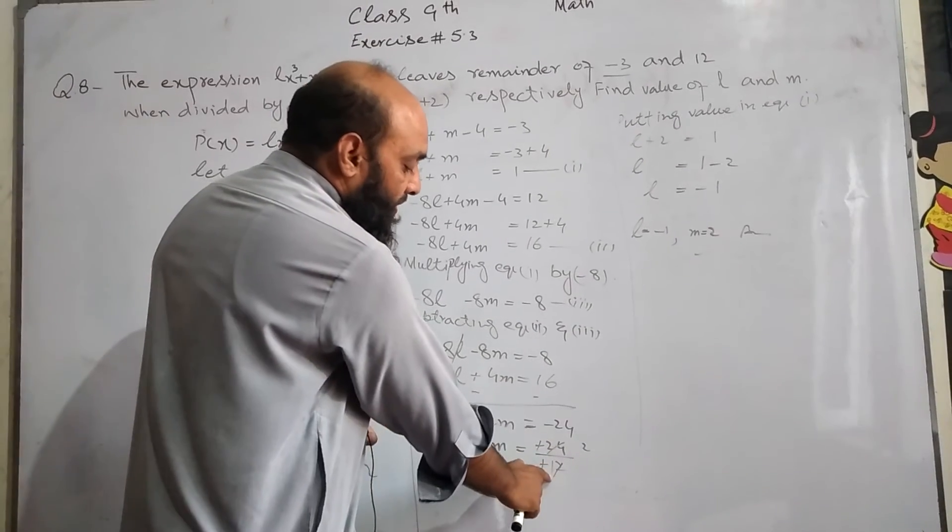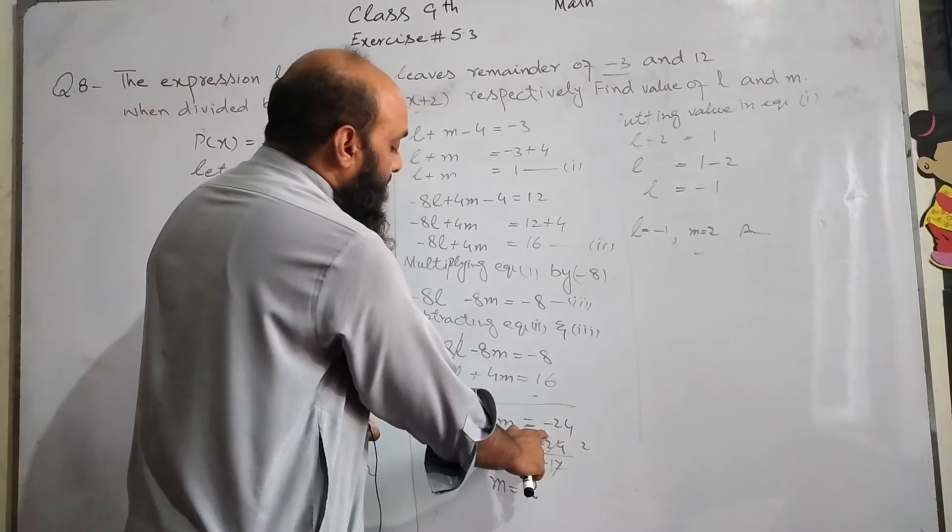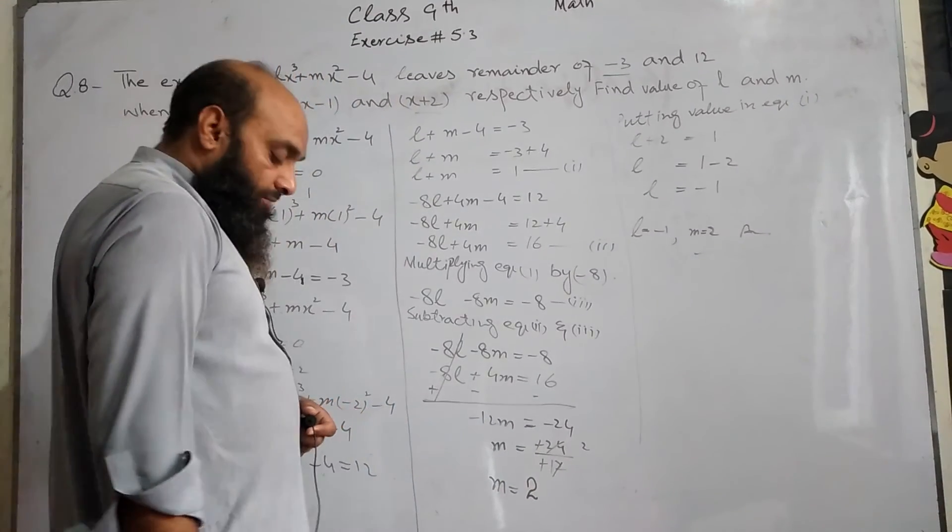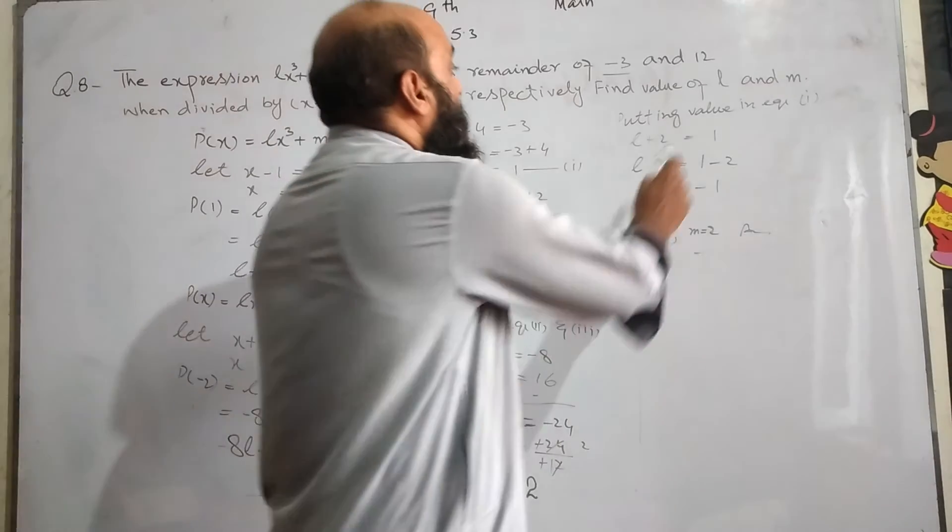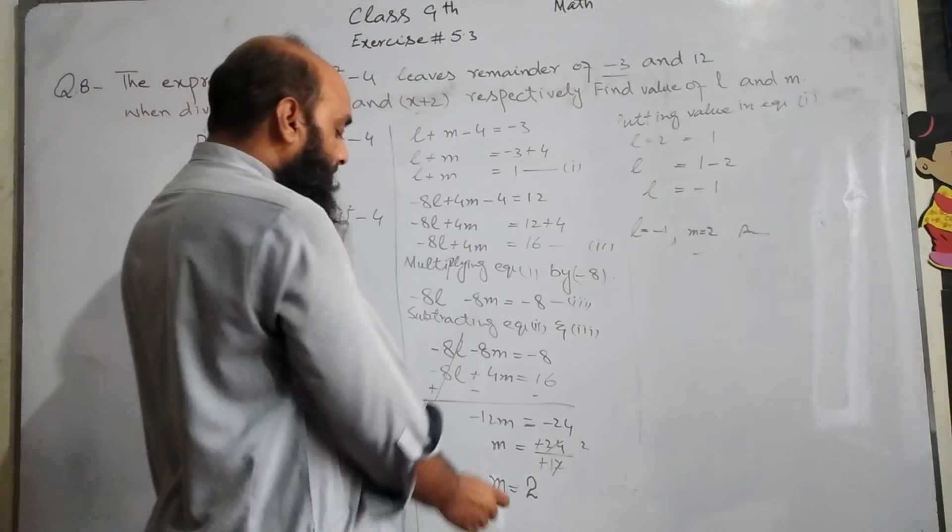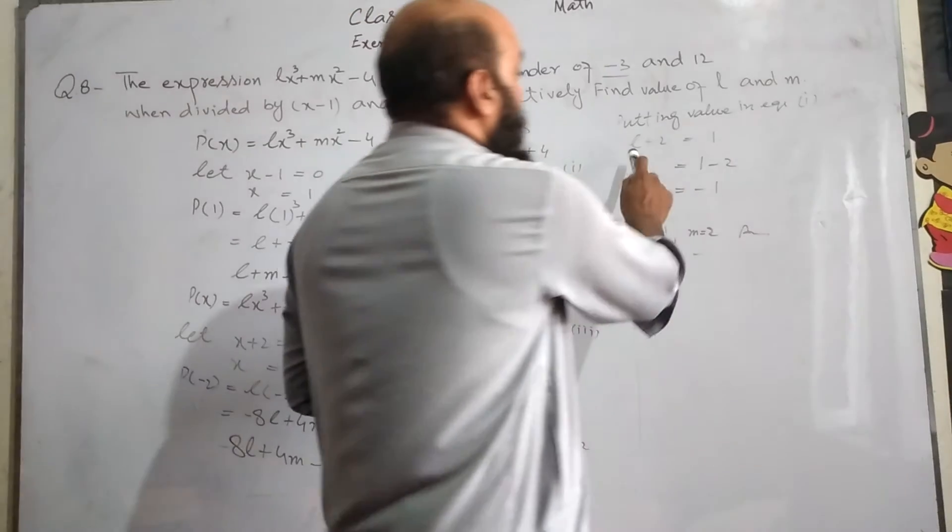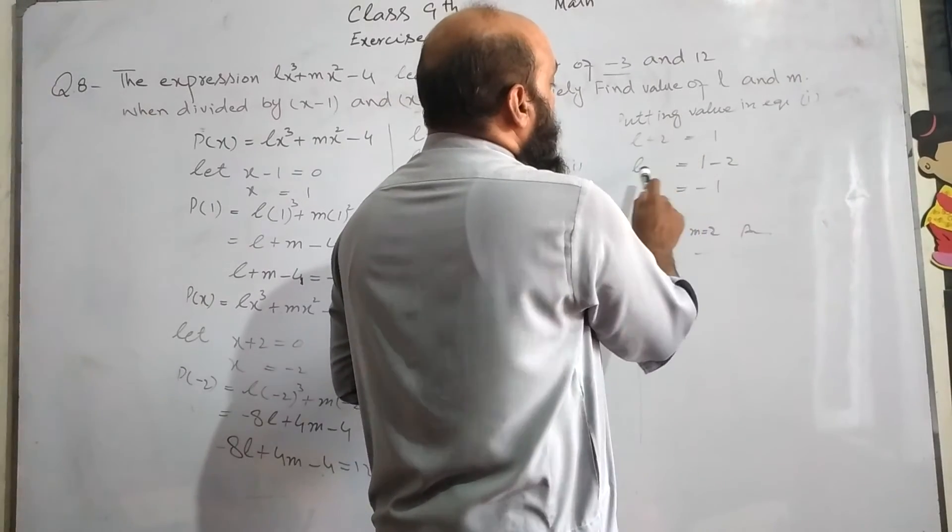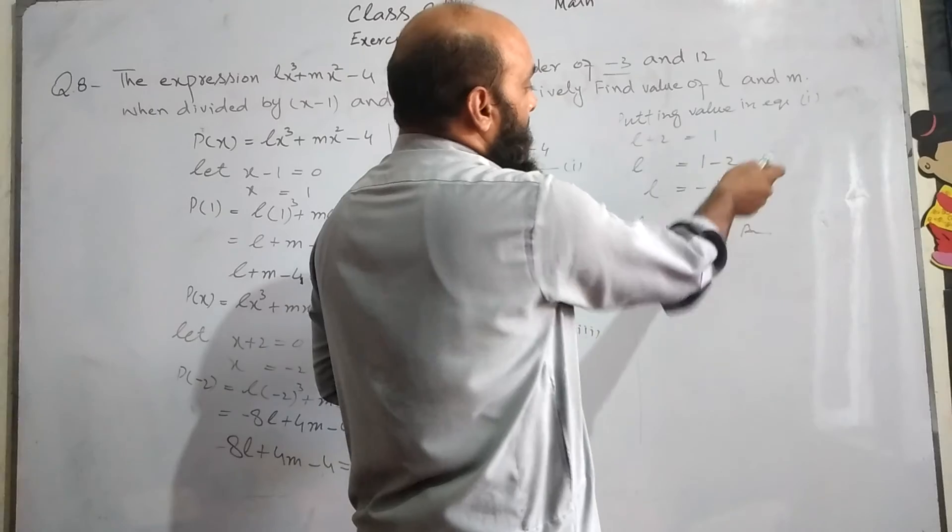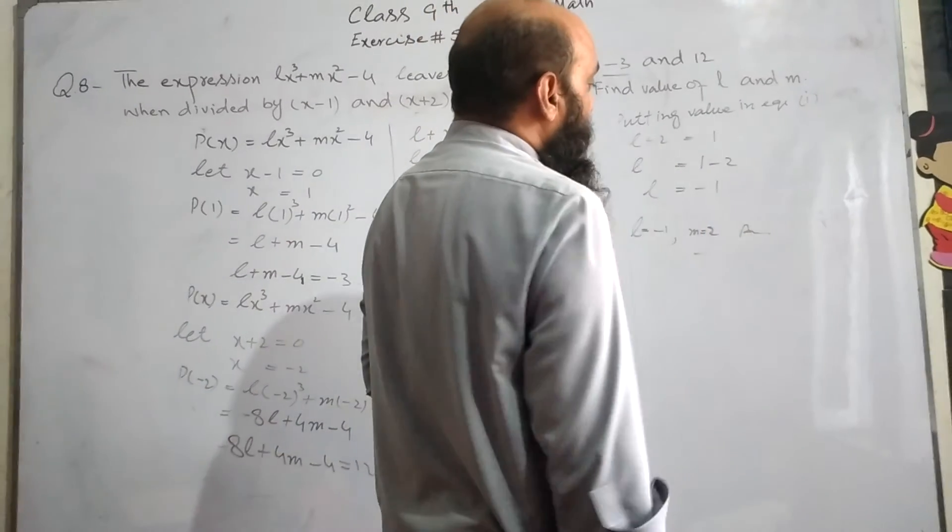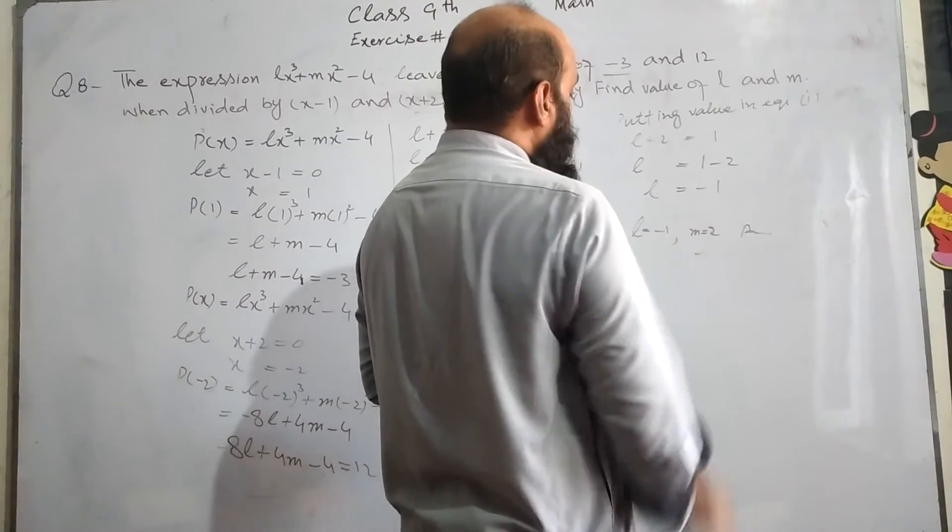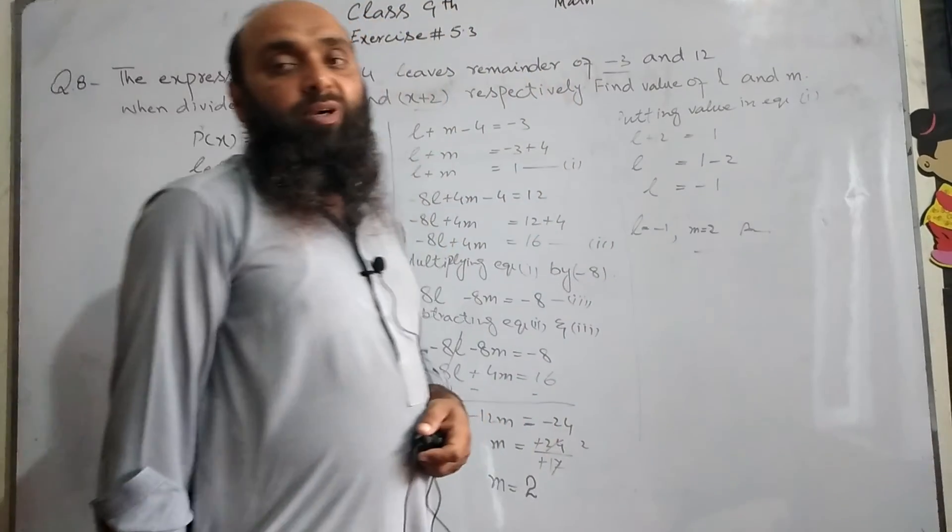When we put the value in equation 1, m equals 2, so l plus 2 equals 1. L equals 1 minus 2, which gives l equals -1. So l equals -1 and m equals 2.